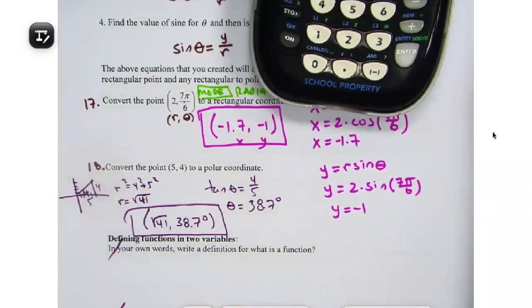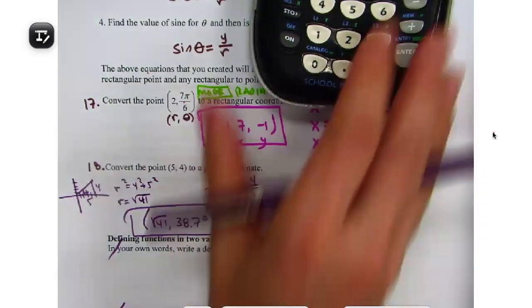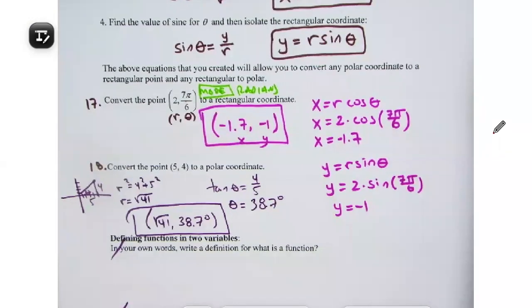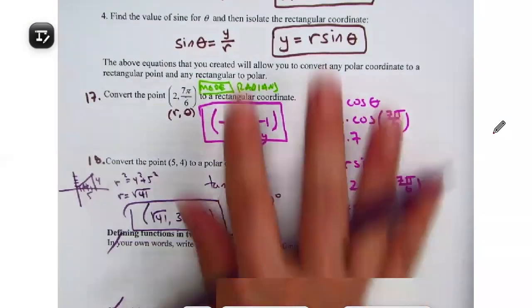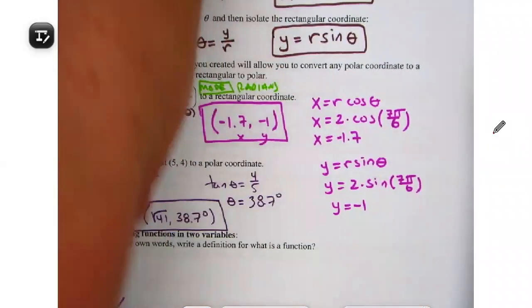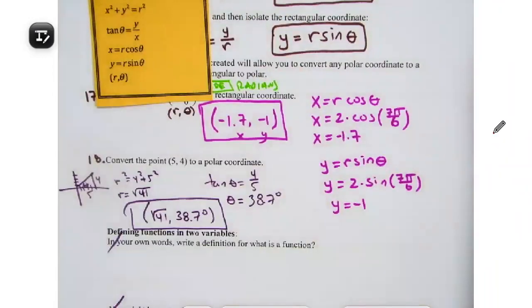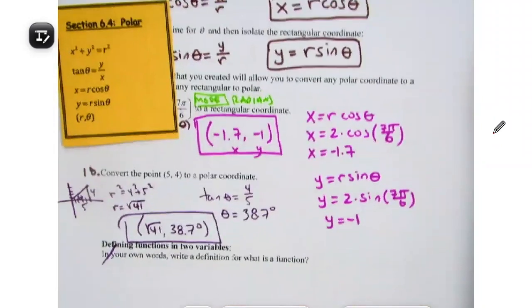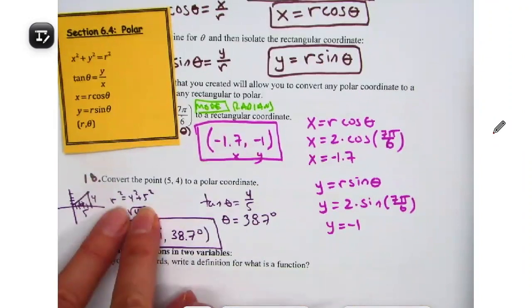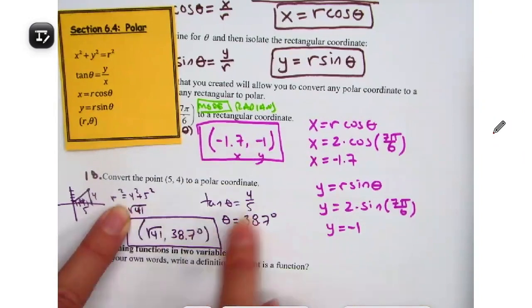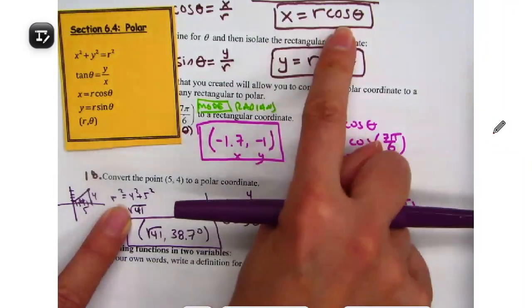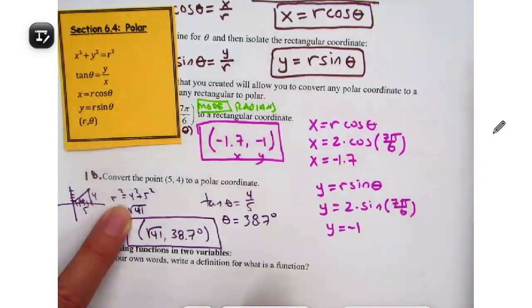We're skipping ahead — we're good here, and now we really have all four equations. We used x² + y² = r², tangent of theta = y/x, and to convert backwards: x = r cos θ and y = r sin θ.